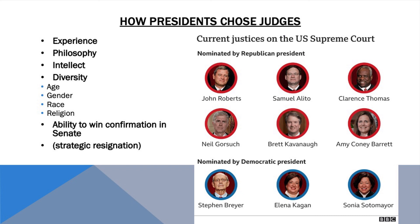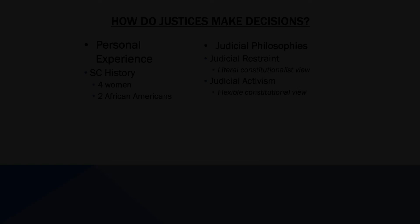This is also why justices currently serving on the Supreme Court are strategic with their resignation. For instance, a judge who tends to make more liberal decisions would not want to retire while a conservative president was in office, as it would result in changing the liberal-conservative balance on the court. This is a big issue that gains a lot of attention among political science scholars. There are four key factors that influence judicial decision-making: personal experience, judicial philosophy, political ideology, and political context.